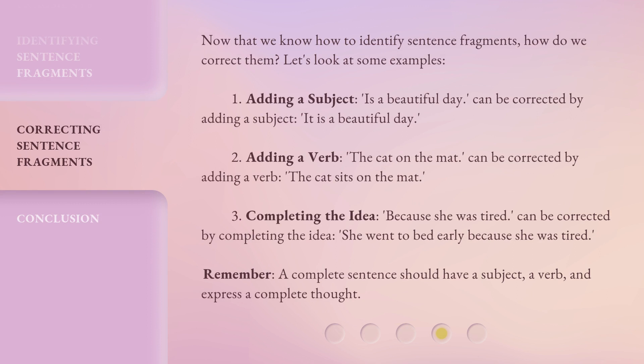Now that we know how to identify sentence fragments, how do we correct them? Let's look at some examples. First, adding a subject: "is a beautiful day" can be corrected by adding a subject — "it is a beautiful day." Second, adding a verb: "the cat on the mat" can be corrected by adding a verb.